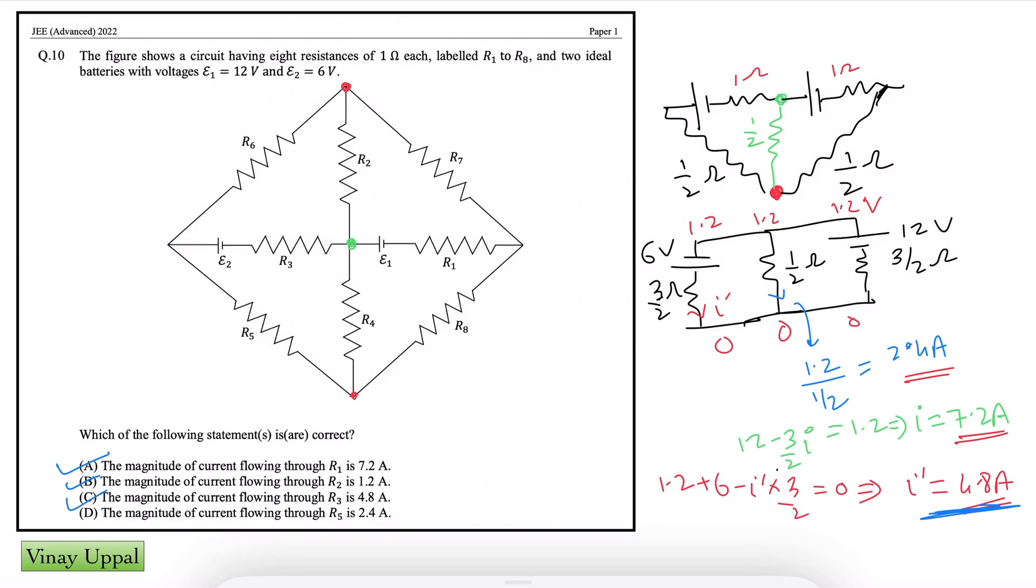And finally, current through R5. So where is R5? R5 is here. Now R5 is part of this 3 by 2 ohms. R5 is combined with R6, which is part of this 6V battery branch. So how much is it? It is 4.8A. So 4.8A will split equally amongst R6 and R5 because both are parallel and equal resistance. So how much will be in R5? 2.4. So option D is also correct.